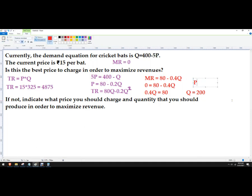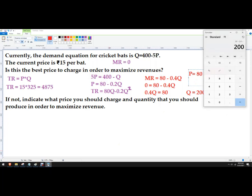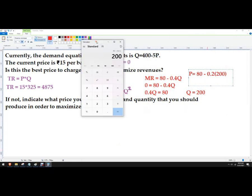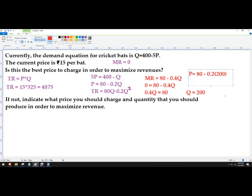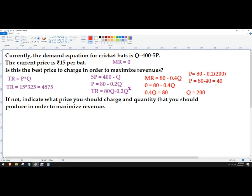So P equals 80 minus 0.2 times 200, which is 40. And 80 minus 40 is 40. So the price should be 40.